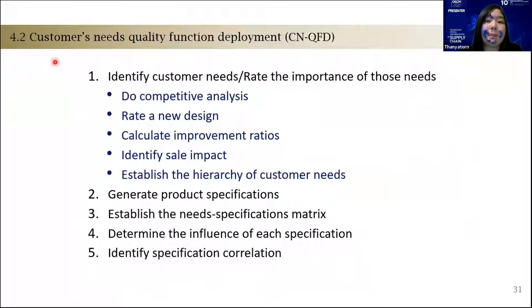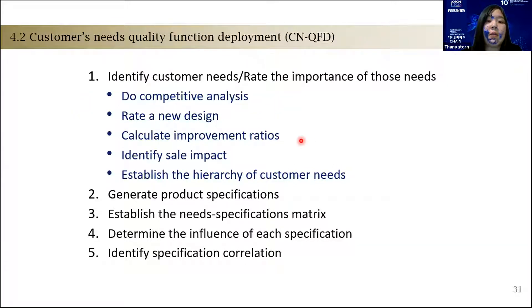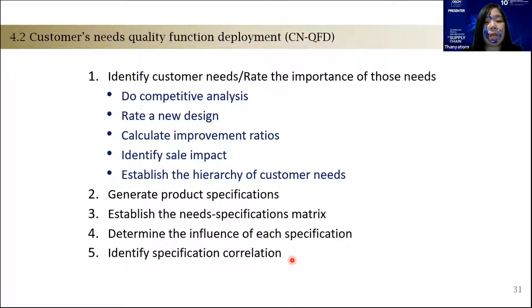Here are the steps of the Customer Needs Quality Function Deployment, CN-QFD: identify customer needs and the importance of those needs, perform competitive analysis, propose a new design, calculate the improvement ratio, identify self-impact, establish the hierarchy of customer needs, generate the product specification, attribute the need-specification metric, determine the influence of each specification, and identify specification correlations.